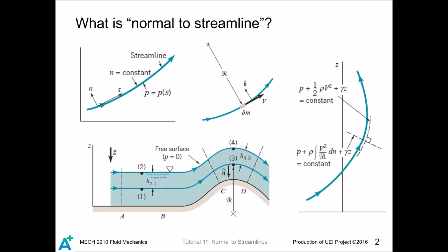We shall discuss what is really meant by normal to streamlines. The streamline coordinates consist of two axes: one is streamline direction, one is normal direction. If the streamline is curved, then the n-axis points radially inward to the center of curvature.